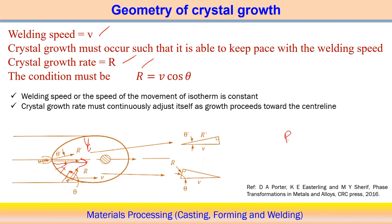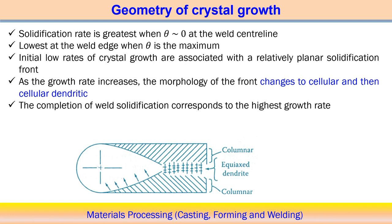When θ = 0, then R = V. When θ = 90 degrees, then R = 0. That means the growth rate equals zero at the boundary, but is maximum at the center. The direction of the columnar growth will always be normal to the surface. The solidification rate is greatest when θ = 0 at the weld center line, and lowest when θ is maximum. Initial low rates of crystal growth are usually associated with a relatively planar solidification front.